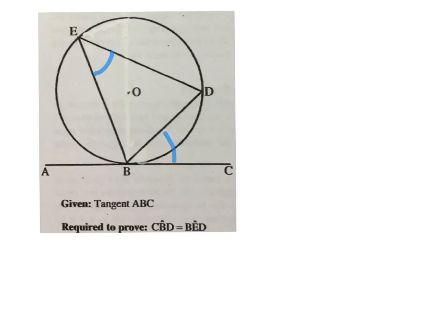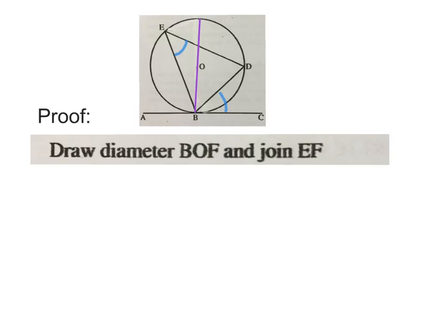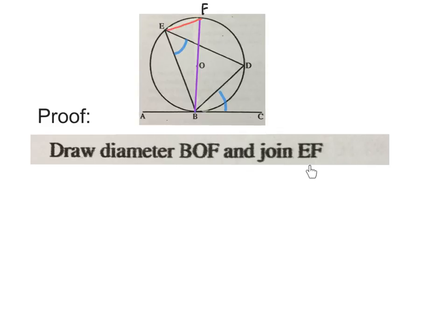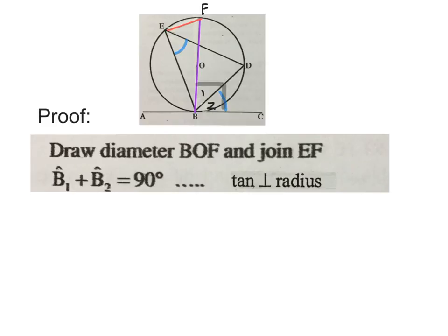You will say draw diameter BOF. I did it in purple here and join EF which I did in red here. It's always from F to the angle that you are proving to be equal. Then you'll write B1 plus B2 equals 90 degrees, and your reason is tan perpendicular to radius. You can also write tan perpendicular to diameter.